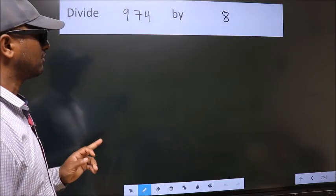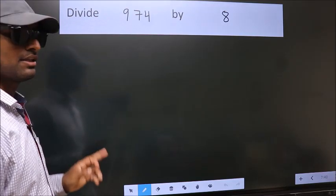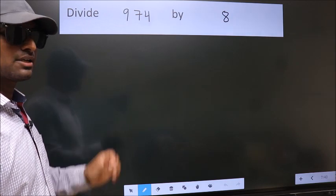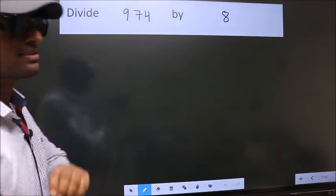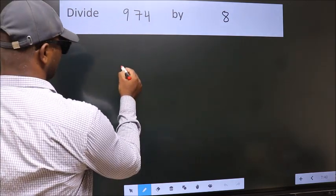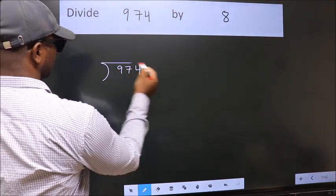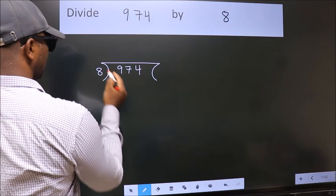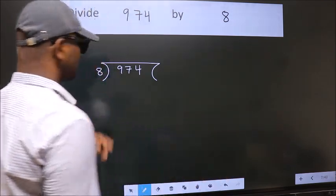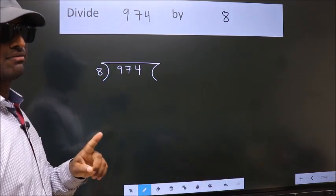Divide 974 by 8. To do this division, we should frame it in this way. 974 here, 8 here. This is your step 1.